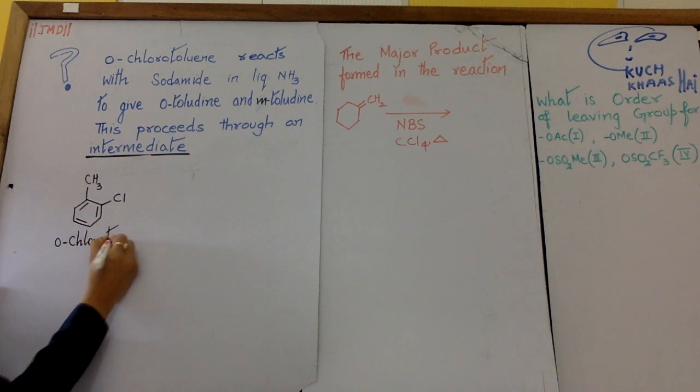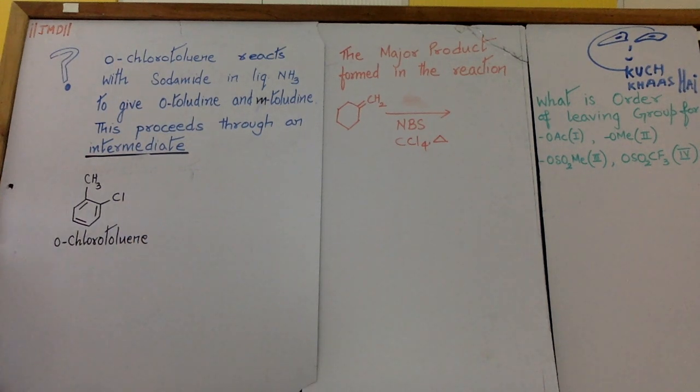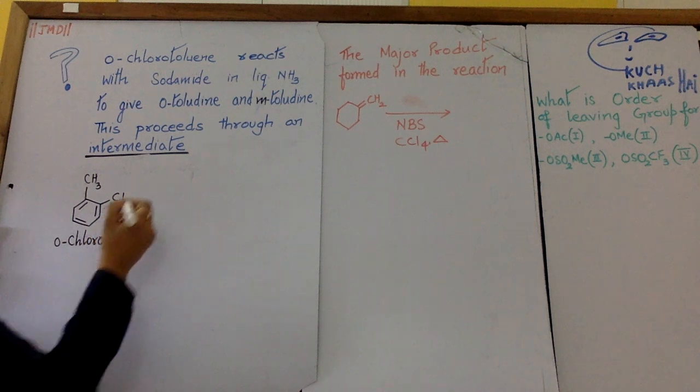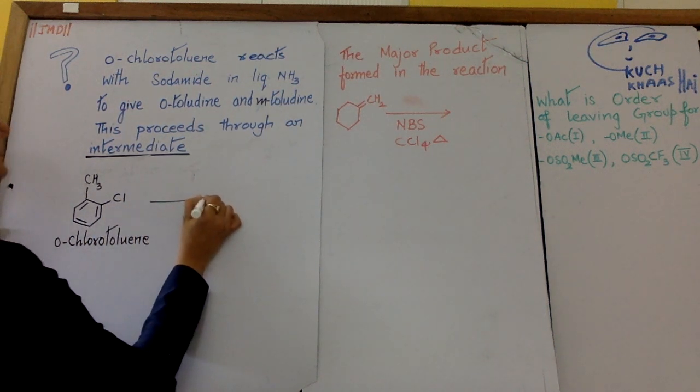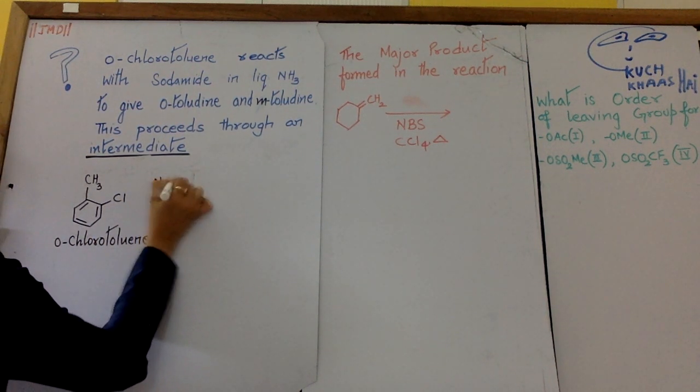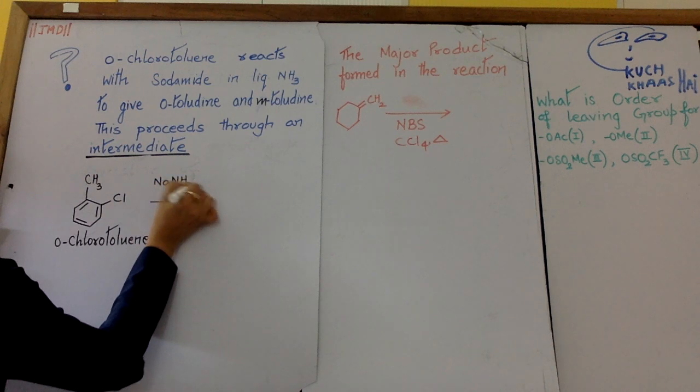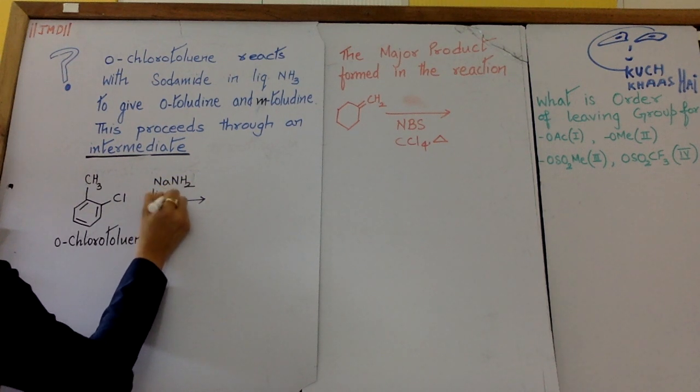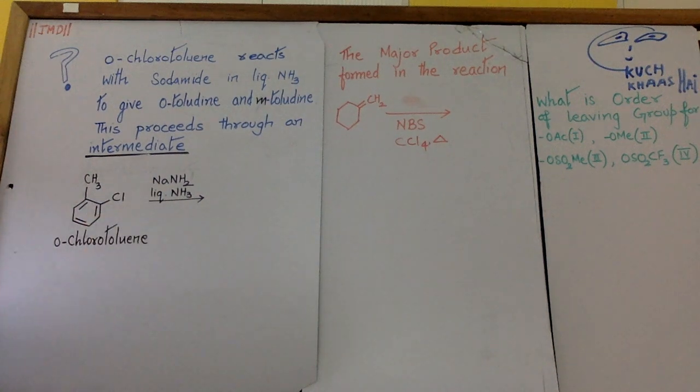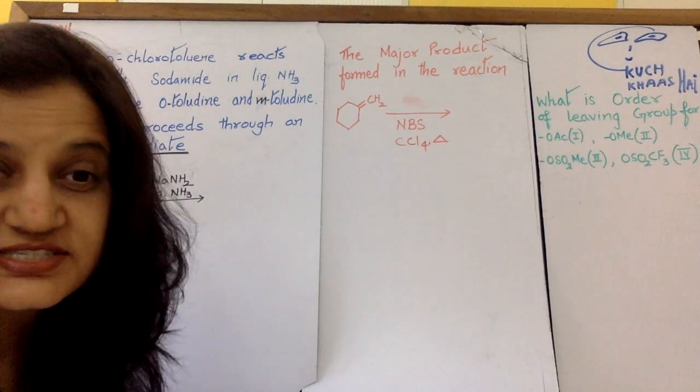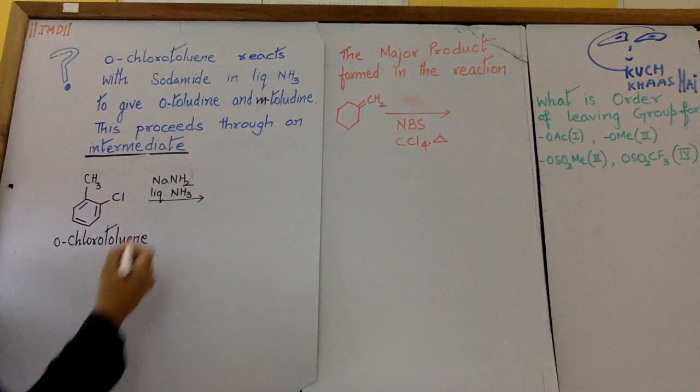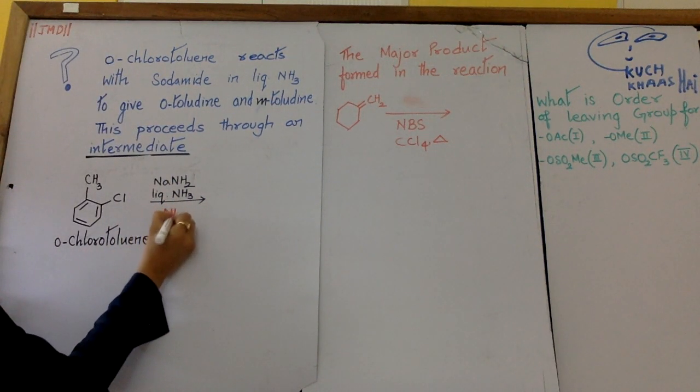Orthochlorotoluene or 2-chlorotoluene reacts with sodamide, NaNH2 in liquid ammonia. So obviously the nucleophile which is functioning is NaNH2 minus.